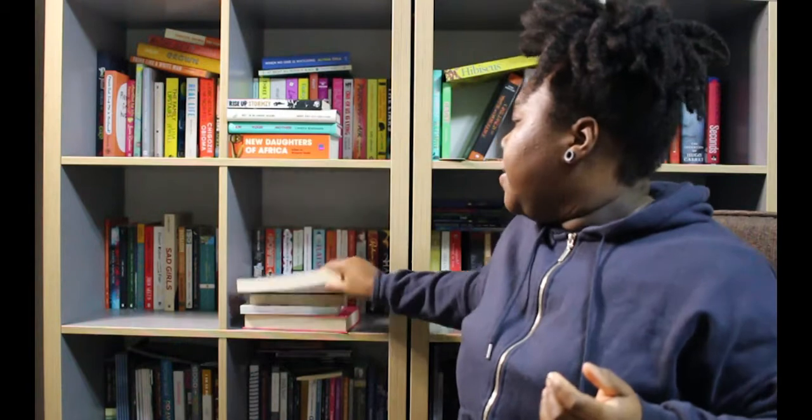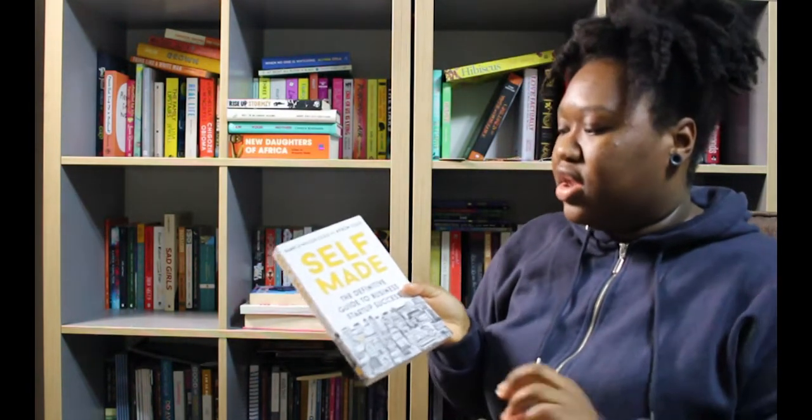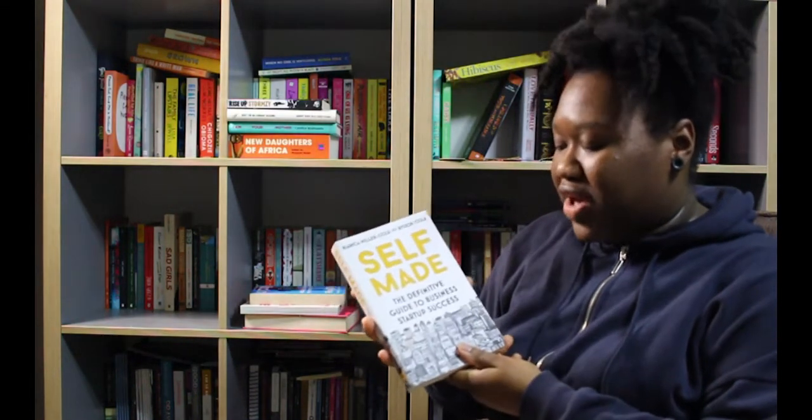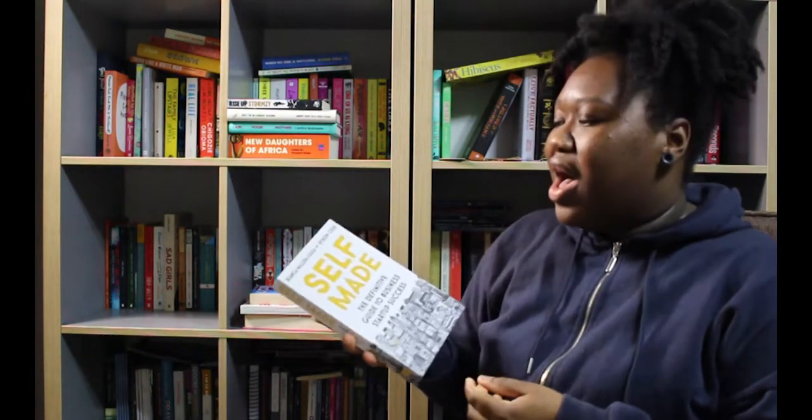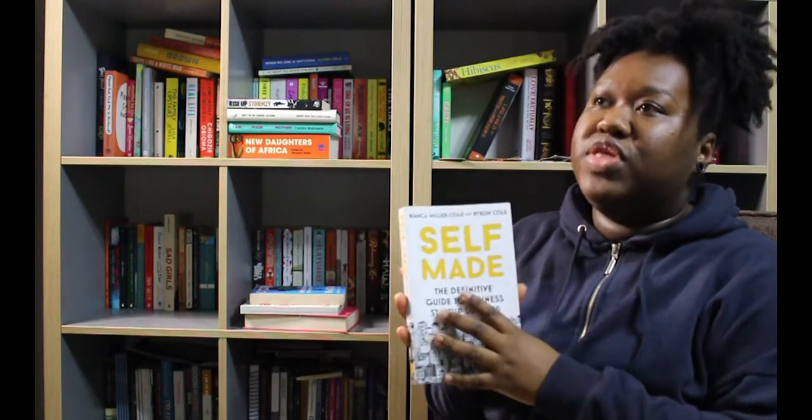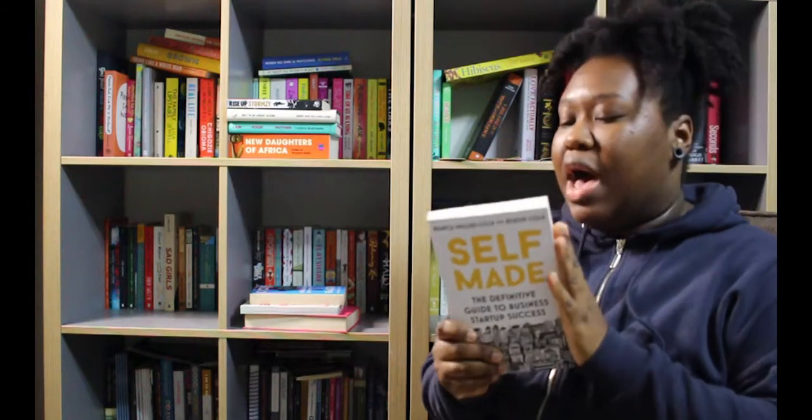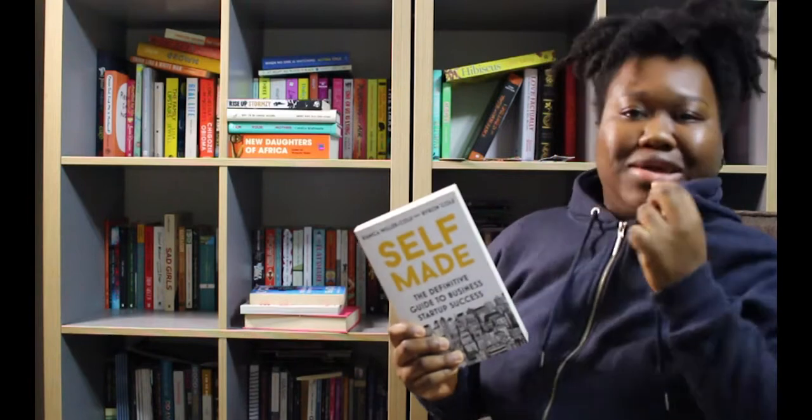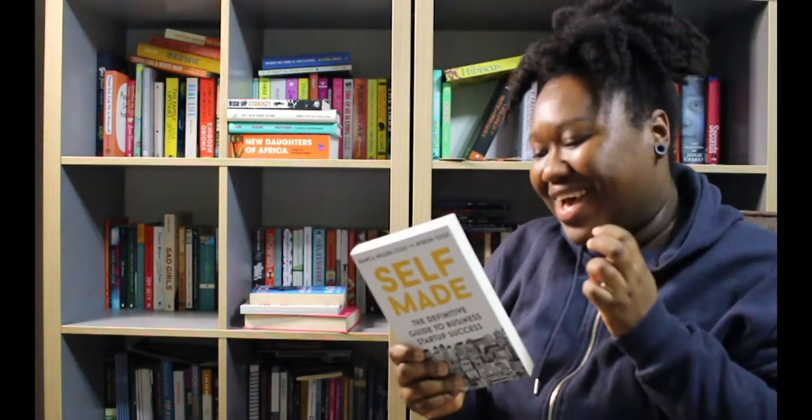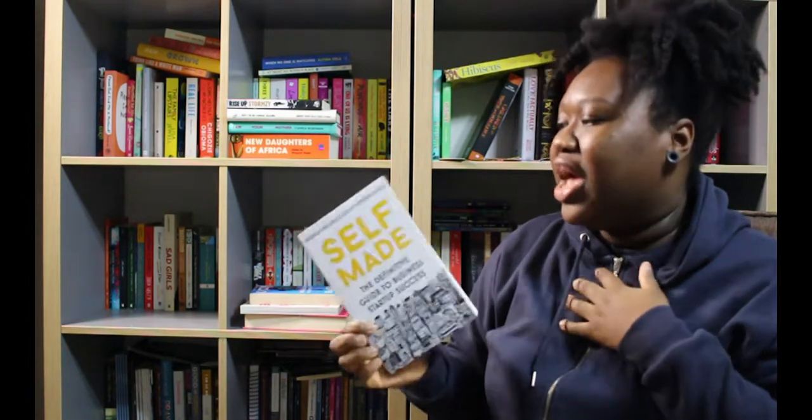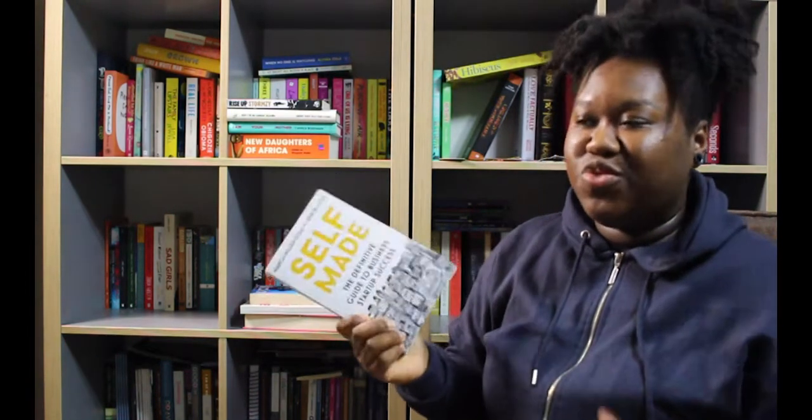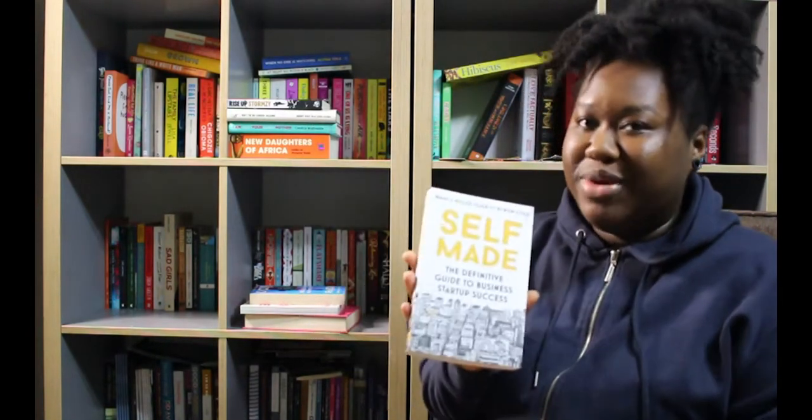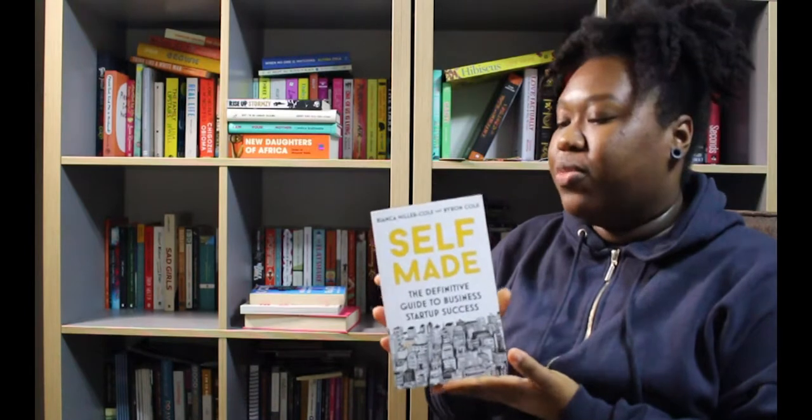This one is called Self Made: The Definitive Guide to Business Startup Success by Bianca Miller-Cole and Byron Cole. These two are a married couple and they were in The Apprentice, the UK version with Lord Sugar. Basically I got this because I've started my own business, which is a subscription box called The Black Book Box, and I just wanted to get some more information.